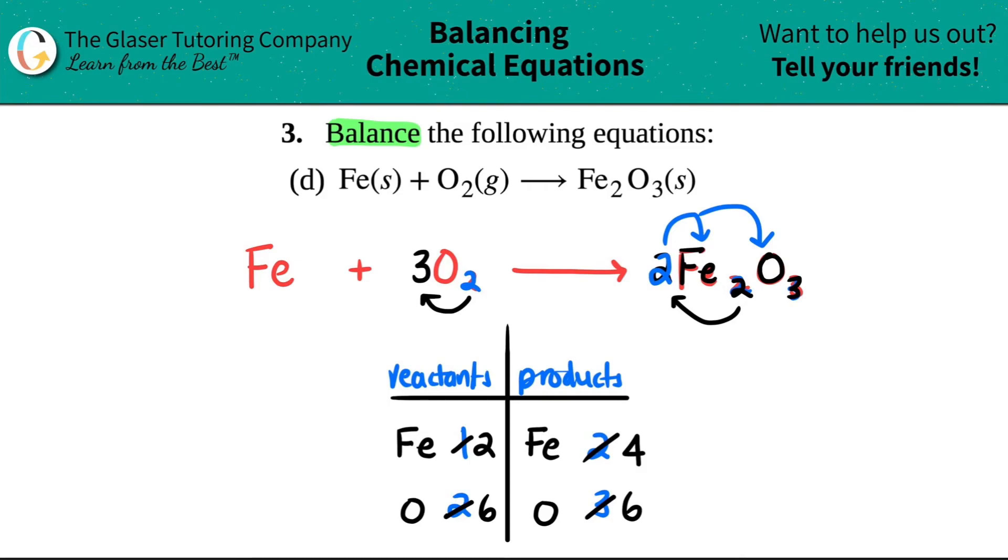If I get rid of this, I'm back to only having one iron. But now I still look at it. I have one iron. I want to get to four. One times what will get me four? Four. So if I put a four here, this will change to four and nothing else changes because iron was by itself. And I have fours across. I got six across for my oxygen. Everything is balanced.